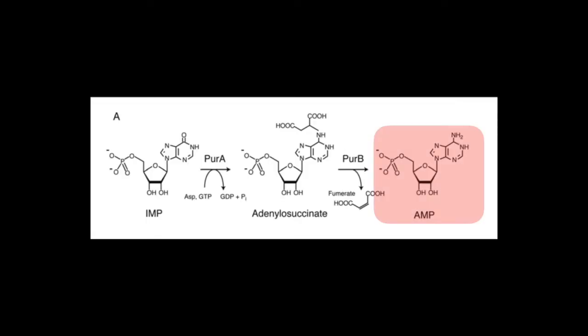From here, IMP can be converted into either of the two purines: AMP, adenosine monophosphate, or GMP, guanine monophosphate.